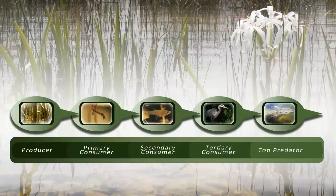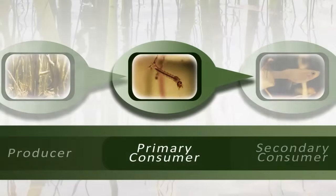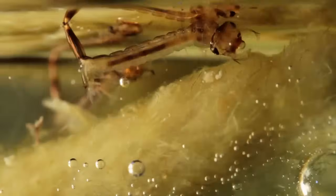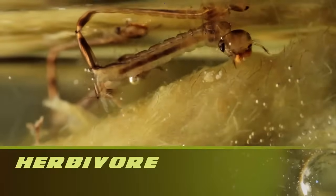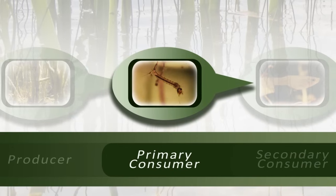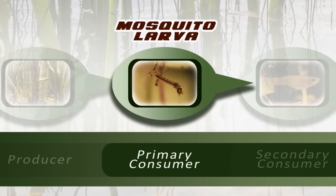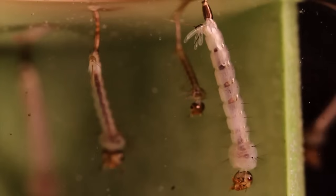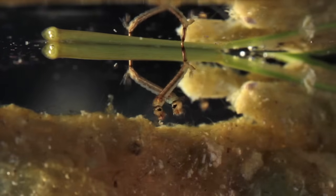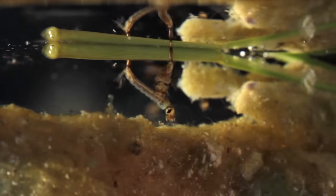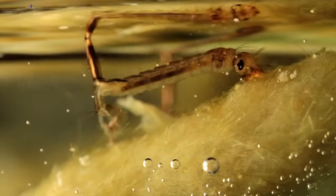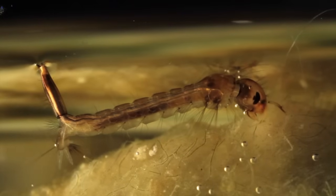The second link of our food chain is occupied by what we call a primary consumer. This is an herbivore, or a plant eater. For our chain, we'll use the mosquito larva. In its larval form, the mosquito is an aquatic herbivore, swimming around munching on organic matter. It loves periphyton.